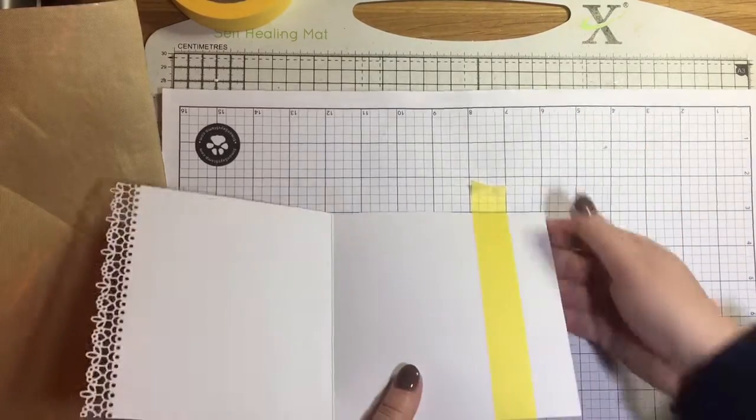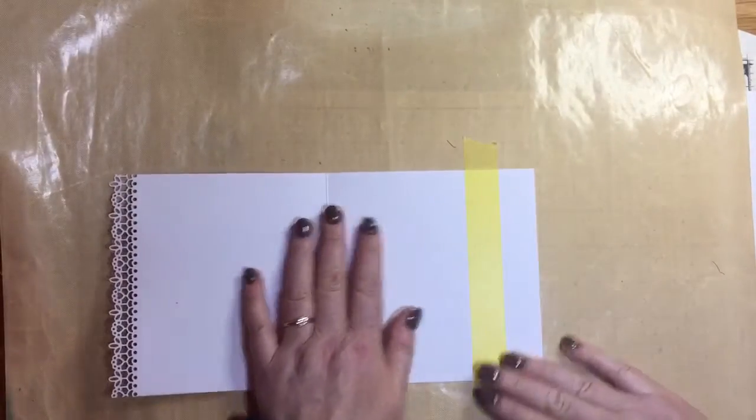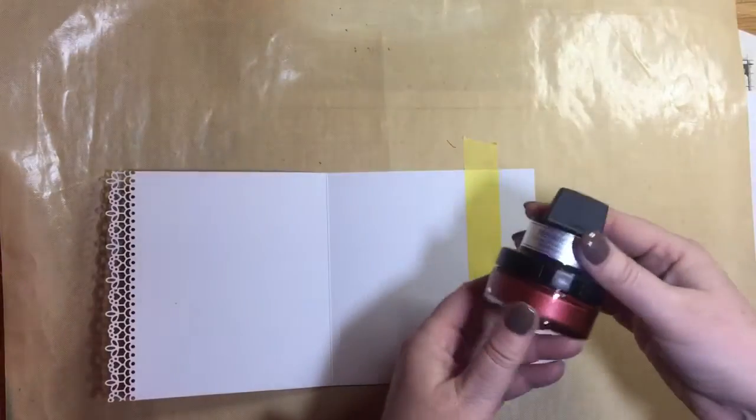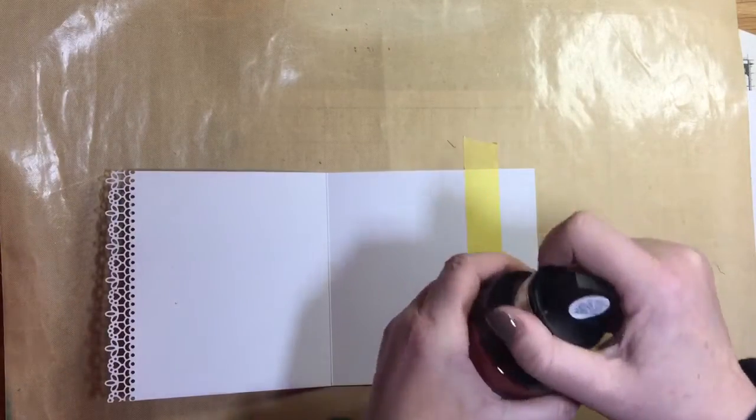I'm just going to bring back across my craft mat because I don't want to get paint all over the place. I'm using some of the Creative Expressions Gilding Polish—this is called Rich Red and it's a beautiful color.